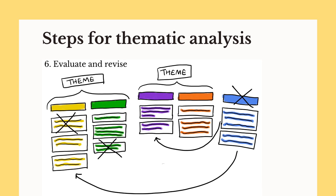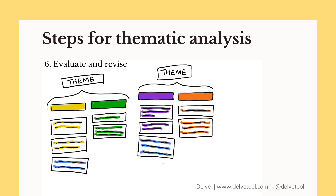Then in step six you'll evaluate and revise your themes. Thematic analysis is an iterative process. Once you have your initial set of themes, review and revise them. Ensure that each theme has enough data to support it and is distinct. Make sure you can articulate the boundaries of each theme and be clear on what excerpts belong in the theme and what don't. If multiple themes are similar to each other, consider merging them together. If a theme doesn't have something to contribute to your overall analysis, don't be afraid to remove it.